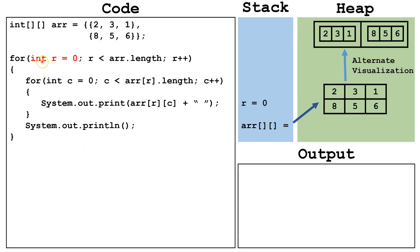We'll start by declaring int r equals zero, placing that on the stack. We'll continue as long as r is less than arr dot length. Since 2D arrays in Java are row major, this is going to tell us the number of rows, or the number of indexes in the outer array. Right now r is zero and there are two rows, so we're going to continue.